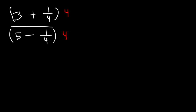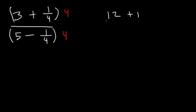So let's distribute the 4. 4 times 3 is 12, and 4 times 1/4 — that's 4 divided by 4 — that's 1. Then 5 times 4 is 20, and 4 times 1/4 is 1. 12 plus 1 is 13, and 20 minus 1 is 19.